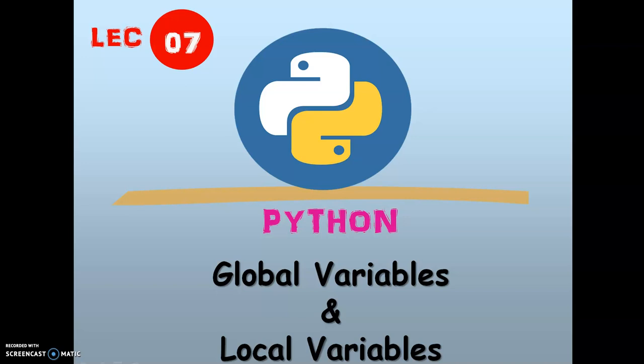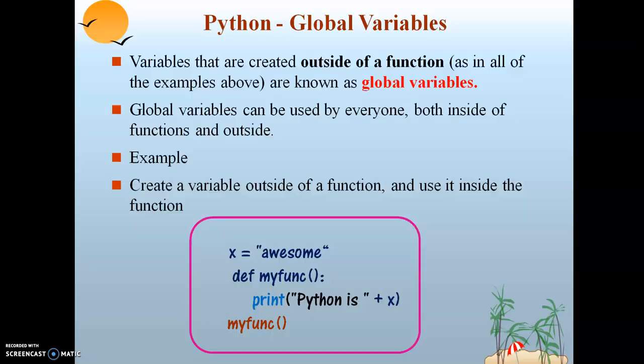Welcome back to my seventh video lecture on the Python series. Today's topic is global variables and local variables in Python. Variables that are created outside a function are known as global variables.